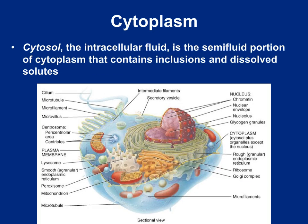The cytoplasm is basically everything inside the cellular membrane. It includes the cytosol — the cellular jelly in which the organelles are floating — as well as the organelles themselves. Some textbooks technically say that the nucleus is not part of the cytoplasm, but as far as you're concerned, anything inside the cell membrane is part of the cytoplasm.